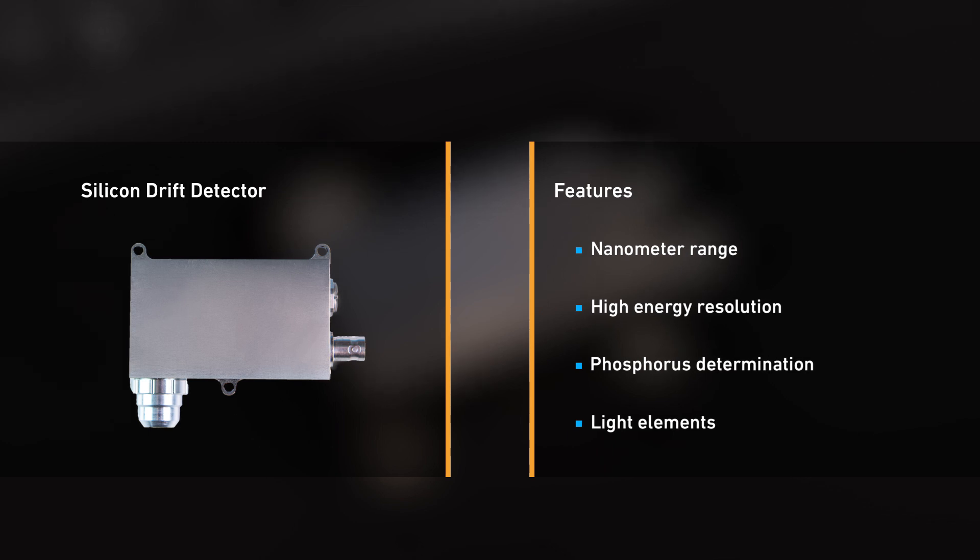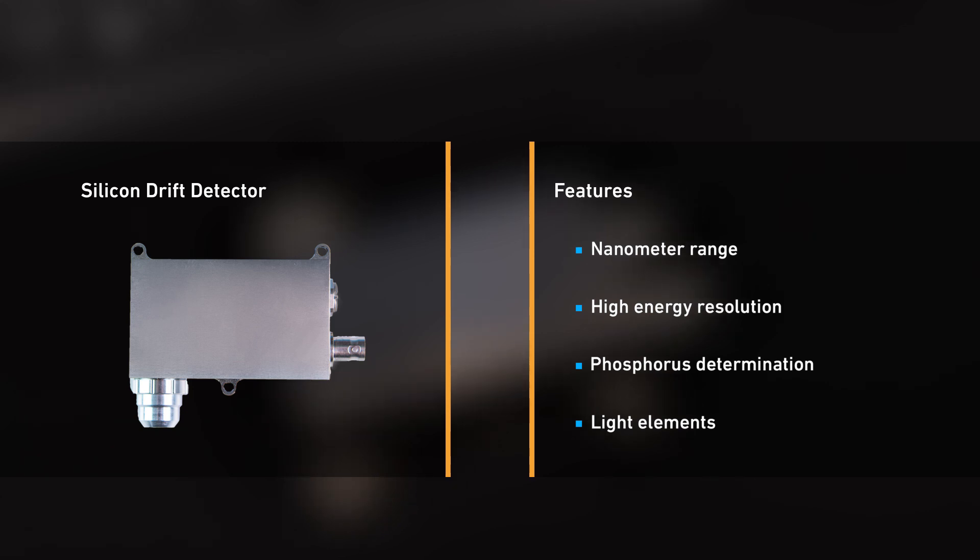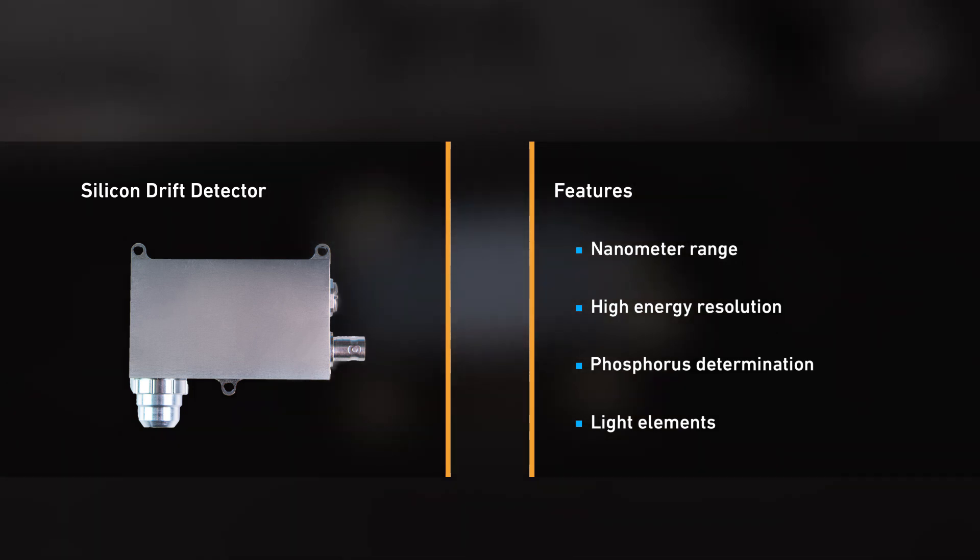It has a modern silicon drift detector that achieves high accuracy and good detection sensitivity and can analyze elements down to the nanometer range. It is one of the best detectors for measurement of light elements such as aluminum, silicon, phosphorus, or chlorine.